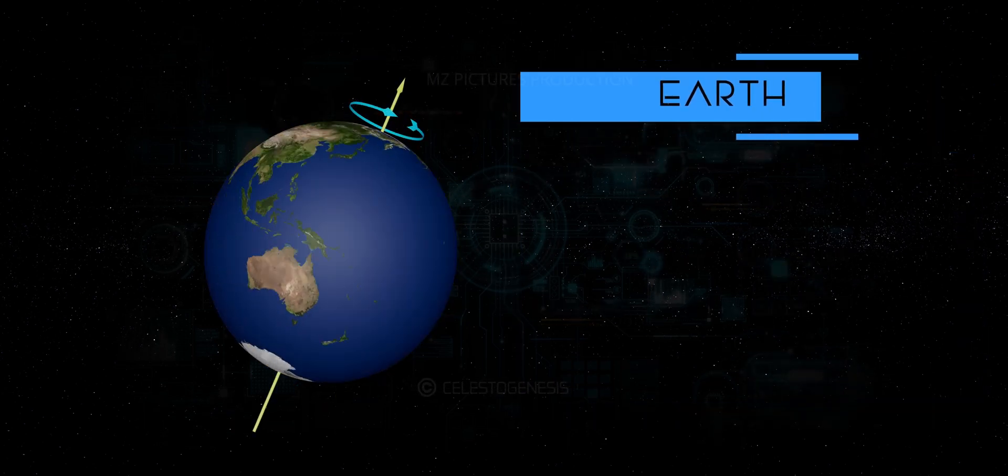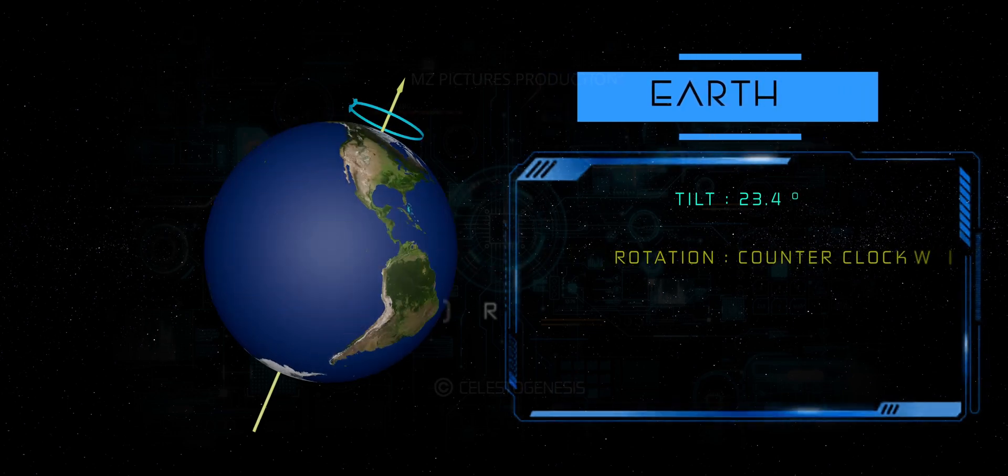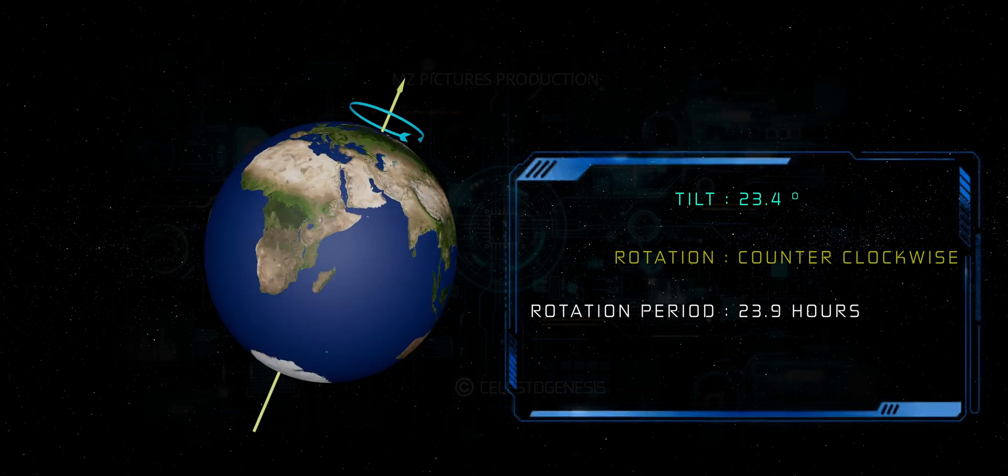Earth. Earth rotates counterclockwise, prograde, when viewed from above the north pole, completing one rotation in about 24 hours. This rotation causes the day-night cycle.